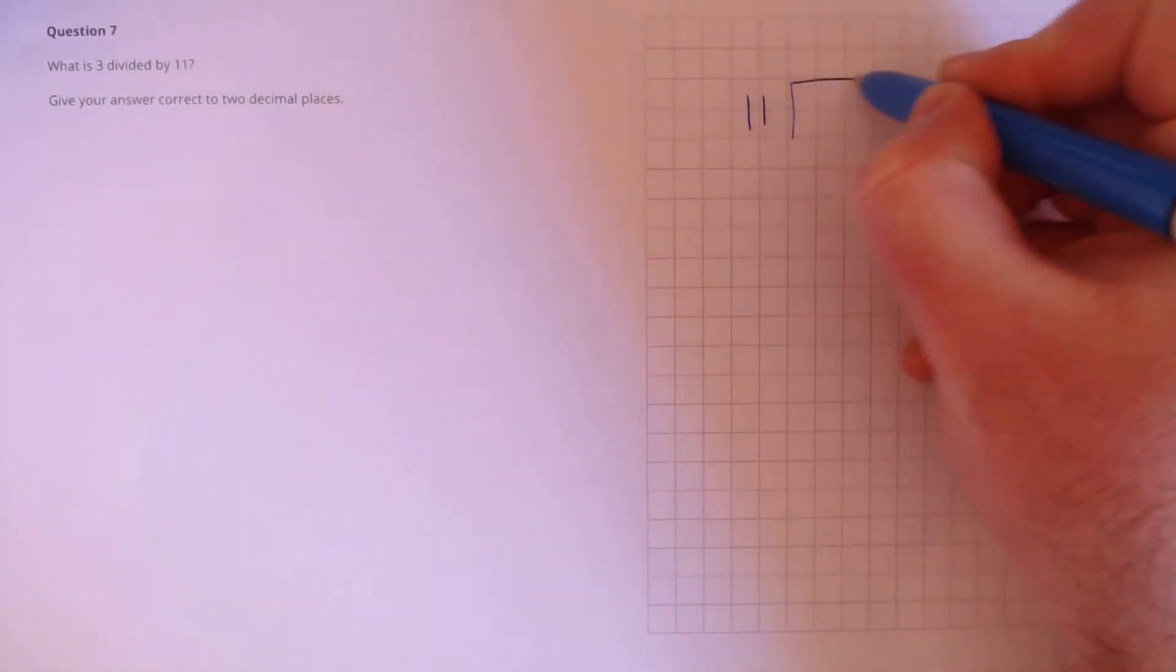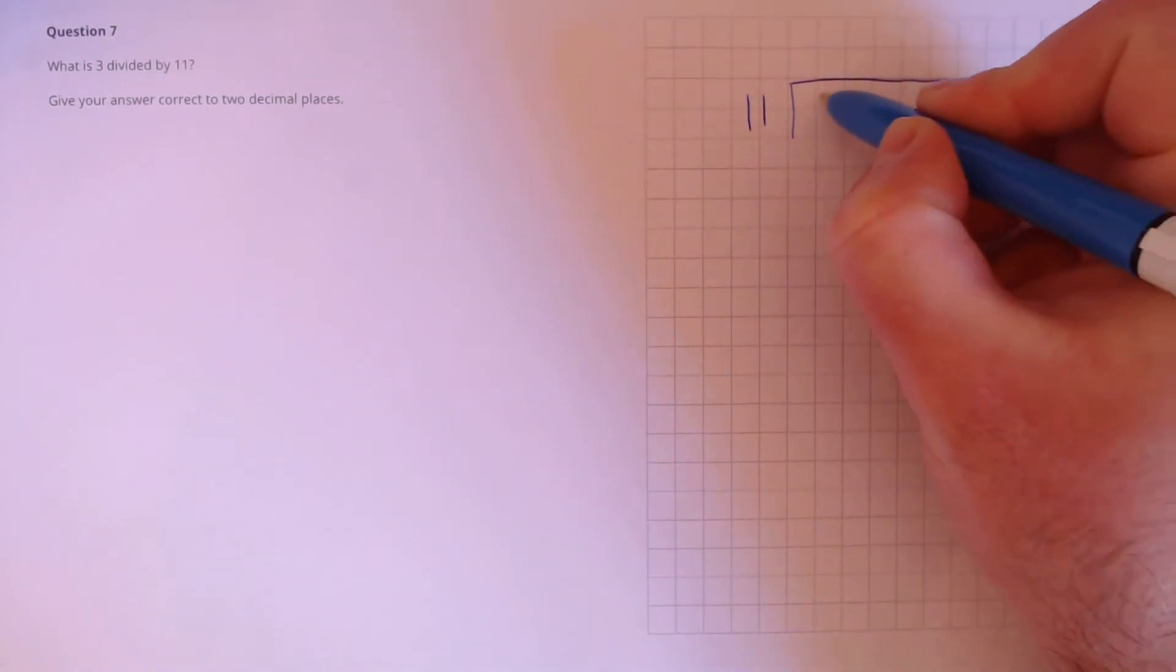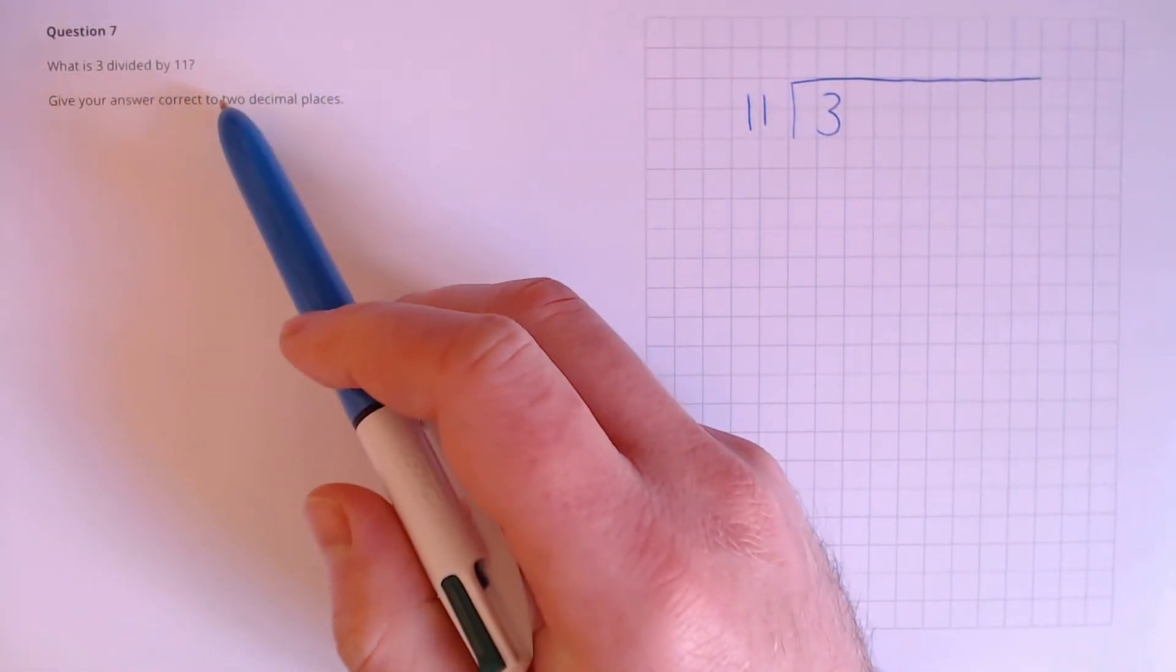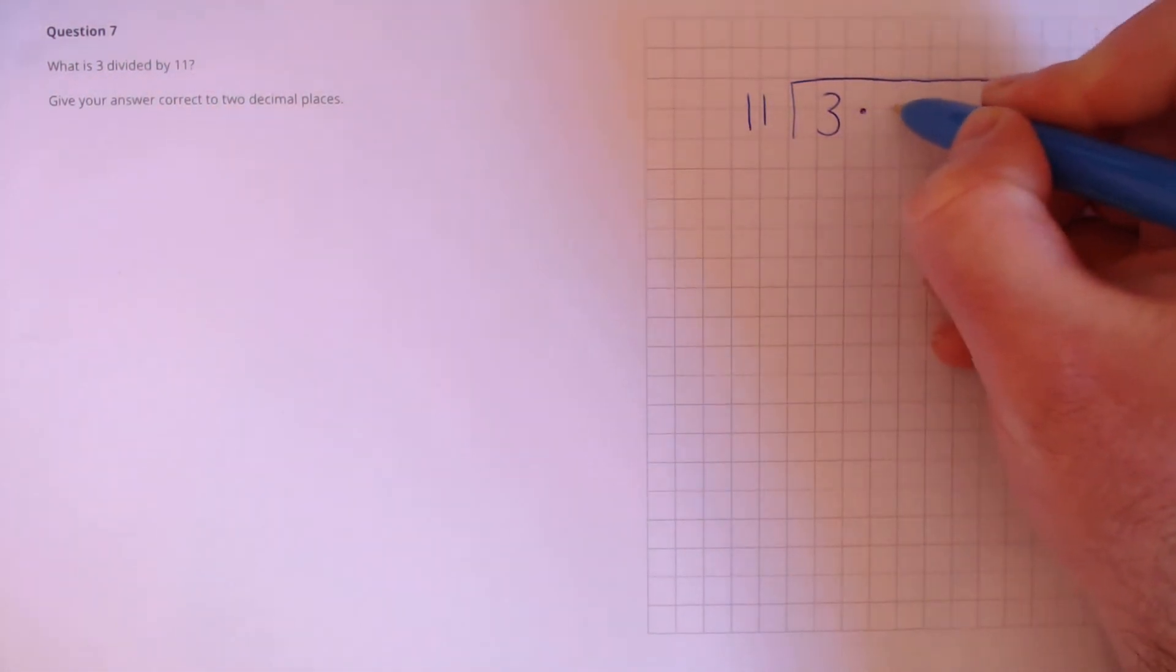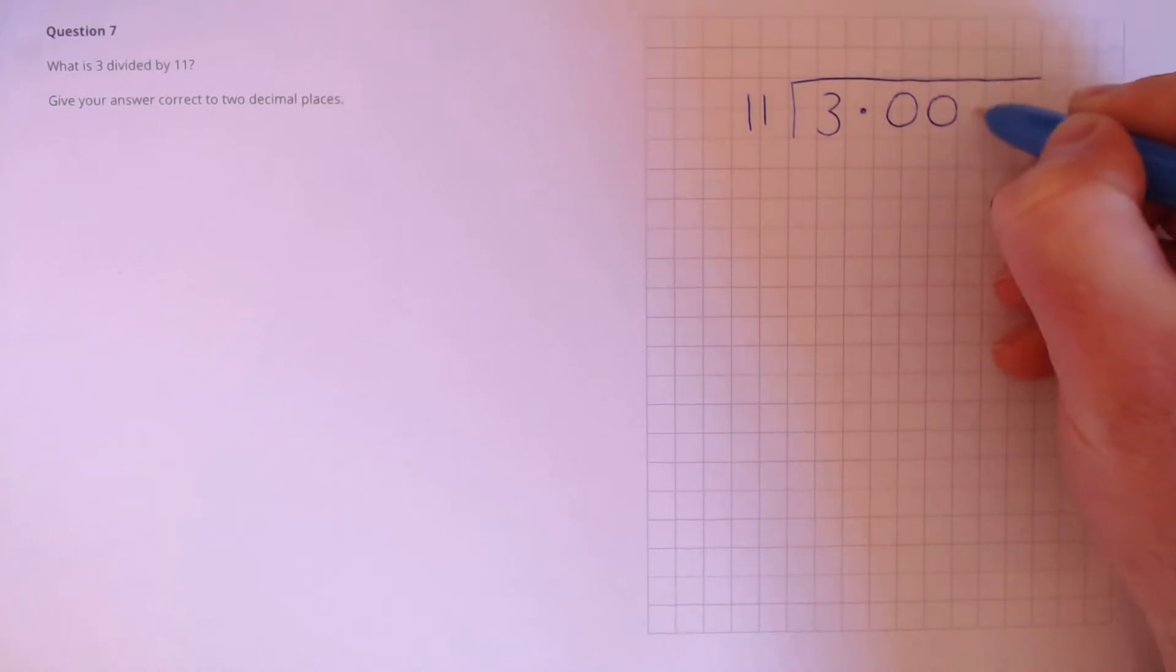To do this we're going to use short division. So there's 11 on the outside and here's 3 on the inside. We know this number is going to be less than 1 because we've got a fraction 3 over 11. So just to help us out I'm going to put in the decimal places here. 3.0000 which is the same as 3.